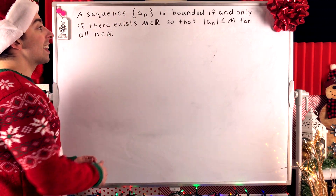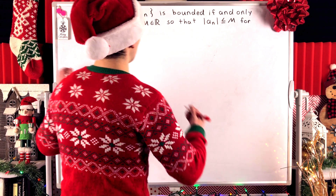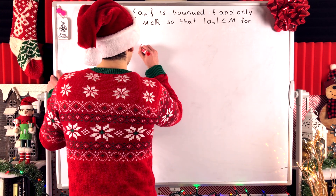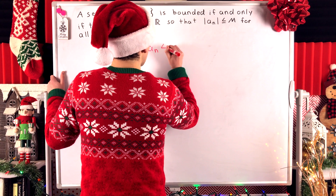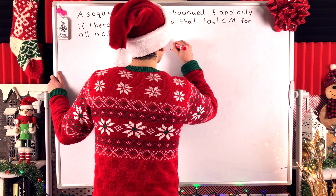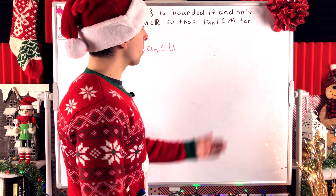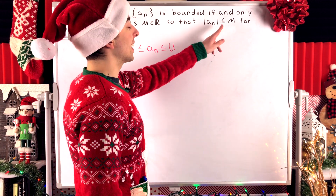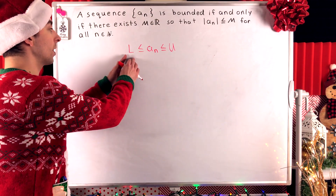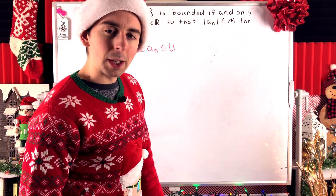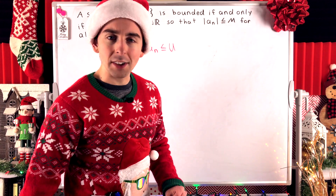We'll begin by assuming that our sequence is bounded and use that assumption to prove that there must exist this sort of real number. Now if our sequence is bounded, by definition there is some real number — a lower bound, say L — that's less than or equal to every term in the sequence, and every term in the sequence must be less than or equal to some real number — an upper bound, let's say U. Now we could probably use the lower and upper bounds to figure out a real number that's going to fit our desired condition.